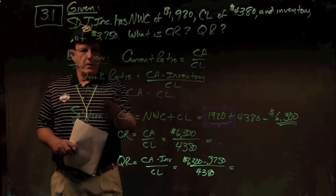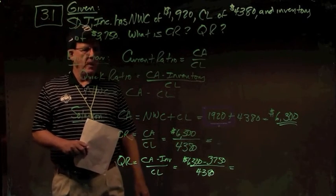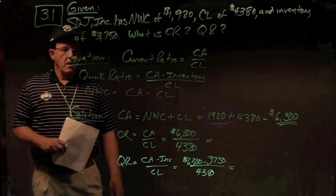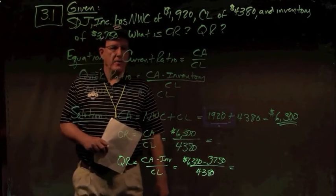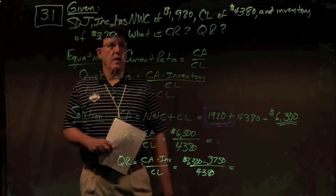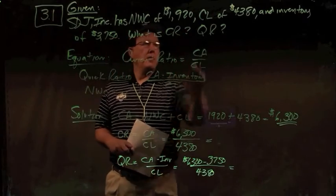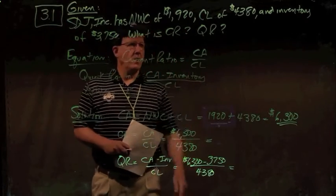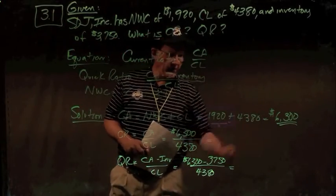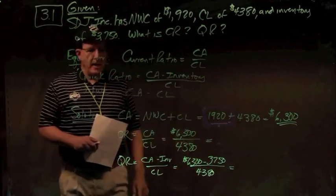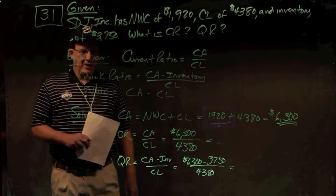We need the equation: net working capital equals current assets minus current liabilities. So our solution: current assets equal our net working capital of $1,920 plus our current liabilities of $4,380, which gives us a current asset value of $6,300.